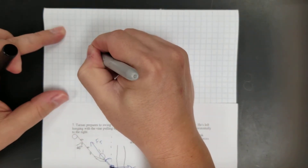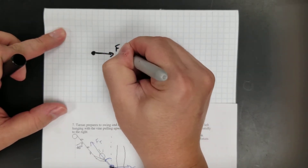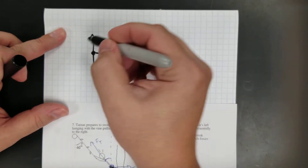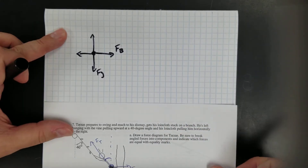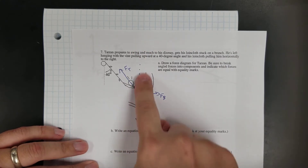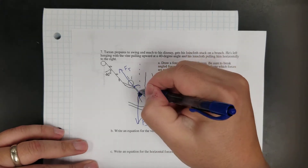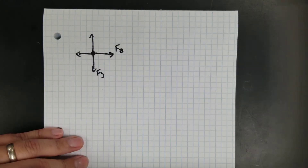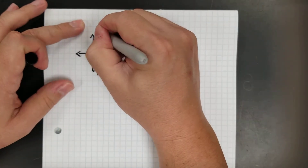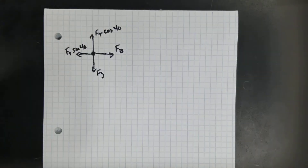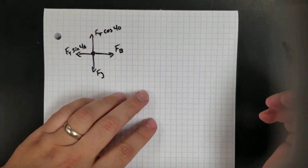So let's start over. Here's my dot representing Tarzan. I have FB pulling this way, FG pulling down, and then I have tension broken up into two components. The component pulling up along where the angle is touching — that's going to be my cosine component pulling up. So this will be FT cosine 40, and this will be FT sine 40. Now I have a free body diagram.